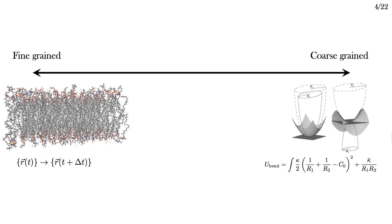These are, of course, the extremes on the scale of coarse graining, and there are many intermediates. The one that I want to focus on here is self-consistent field theory.